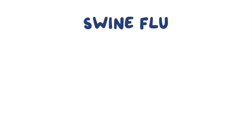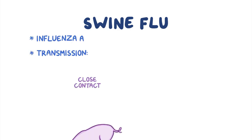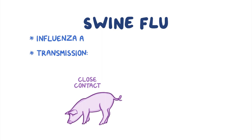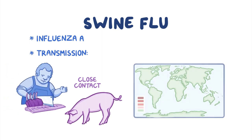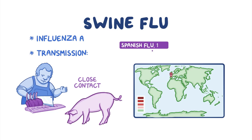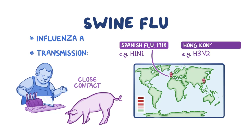Swine influenza is also caused by influenza A. Transmission occurs during close contact with the pig, such as during the raising process, transport, or meatpacking. Well-known outbreaks include the Spanish flu in 1918, which was caused by the H1N1 strain, and H3N2, which was responsible for the Hong Kong flu in 1968.